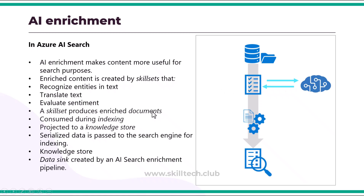AI enrichment ensures your content becomes more useful for search purposes by creating enriched content with the help of skillsets. While configuring AI enrichment, you configure skillsets. Skillsets recognize entities inside text, associate translated text, evaluate sentiment analysis — determining whether statements are positive, negative, or neutral — and support indexing configuration. The skillsets produce an enriched document. Your ingested data and enriched data differ significantly, as the enriched data has AI-enabled configurations applied using different AI services, each contributing different kinds of enrichment.